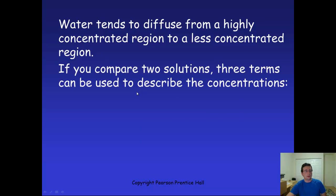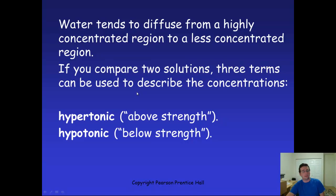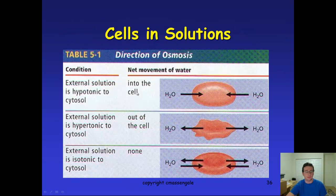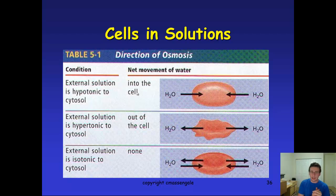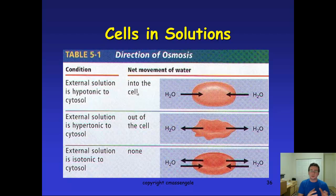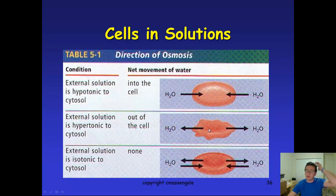If you compare two solutions: hypertonic means above, hypotonic means below, and isotonic means the same. If the cell is in a hypotonic environment, the inside of the cell has more stuff in it, so water rushes inside and makes the cell engorge. If the cell is in a hypertonic solution, the cell loses water and shrinks or shrivels. In an isotonic solution it stays the same. This is an example of what would happen to a red blood cell in those scenarios.